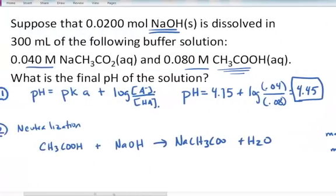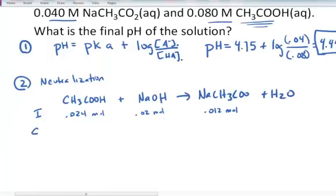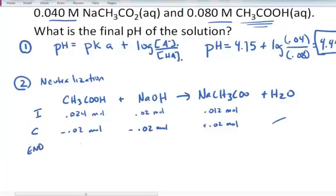Going back to the neutralization equation: initially I have 0.024 moles of acetic acid. I'm adding 0.02 moles of sodium hydroxide, and I already have 0.012 moles of acetate ion. Since this reaction goes to completion, the limiting reagent is sodium hydroxide. I react away all those moles of sodium hydroxide, creating an additional 0.02 moles of acetate. At the end, I have 0.004 moles of acetic acid, no sodium hydroxide, and 0.032 moles of acetate.